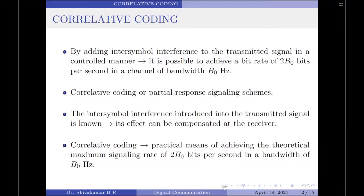Until our previous video, we discussed intersymbol interference as an undesirable phenomenon that produces degradation in overall system performance. However, by adding intersymbol interference to the transmitted signal in a controlled manner, it is possible to achieve a bit rate of 2V₀ bits per second in a channel of bandwidth only V₀ hertz. Such schemes are called correlative coding schemes, also known as partial response signaling schemes.